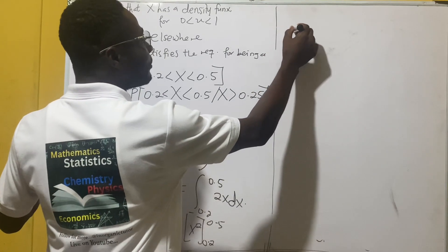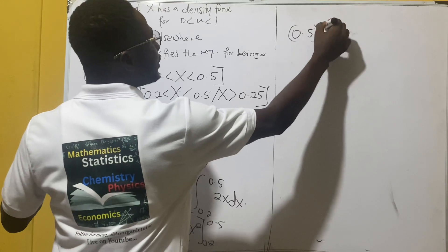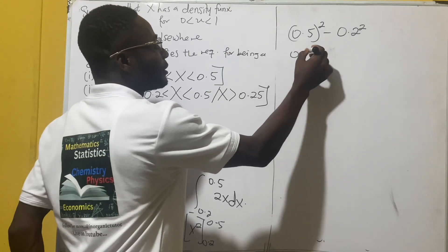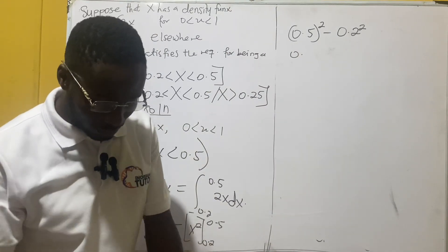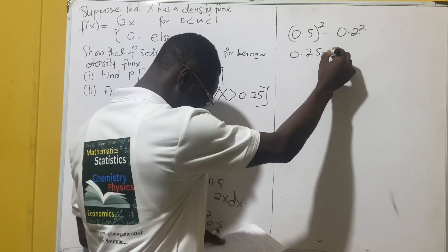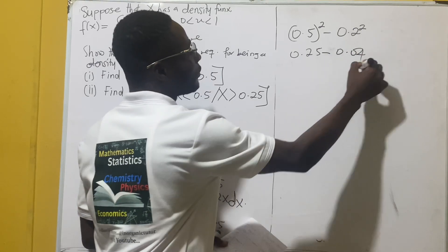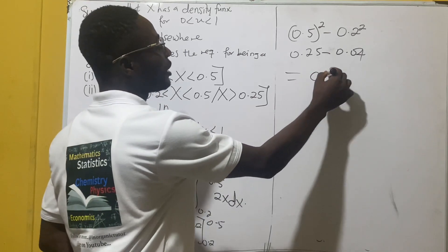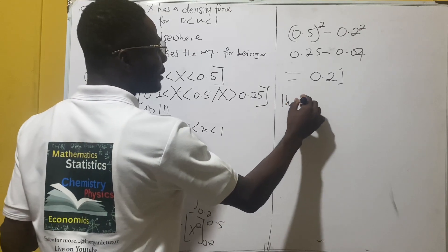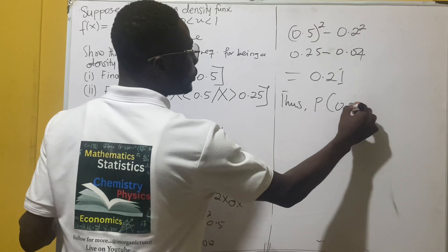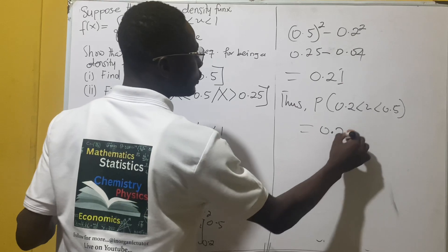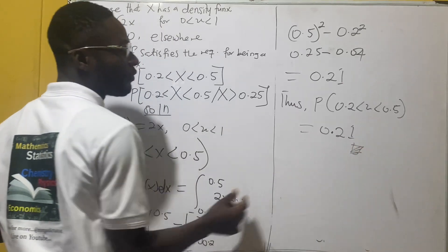Substituting the limits, we have 0.5 squared minus 0.2 squared. When you compute this you get 0.21. So the probability of 0.2 < x < 0.5 is equal to 0.21.